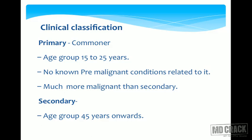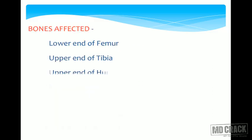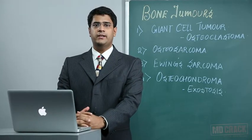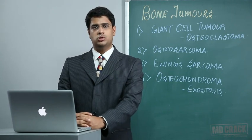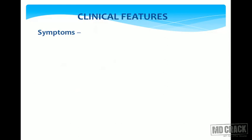Secondary osteosarcoma occurs usually above 45 years. Premalignant conditions associated include Paget's disease, fibrous dysplasia, radiation therapy, multiple osteochondroma, multiple enchondromatosis, and chronic osteomyelitis. Bones commonly affected are the lower end of the femur, upper end of the tibia, and upper end of the humerus — again around the knee joint. Metastasis is through the bloodstream, usually to the lungs.